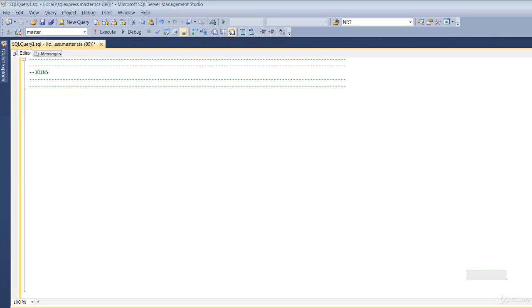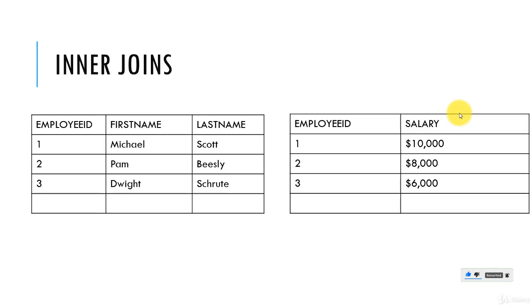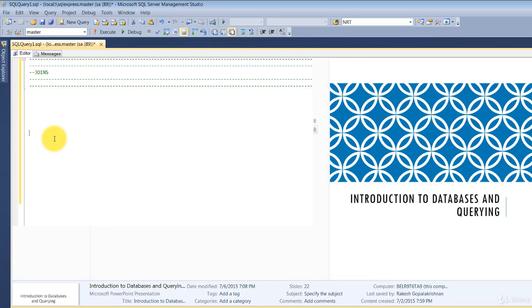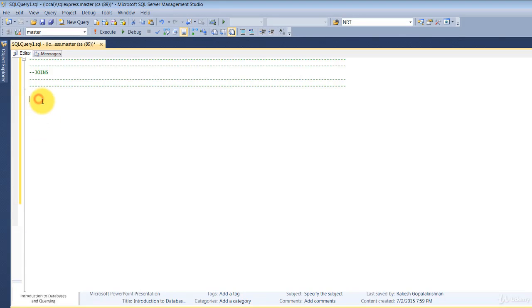Let's get started. When we looked at joins we looked at two tables and said that when we join them using a common column, what we get is the common rows between those two tables. Let's do that — let's create two tables: one called `my_employee` and another `my_salary`, insert three rows each, and look at how an inner join output will look like.